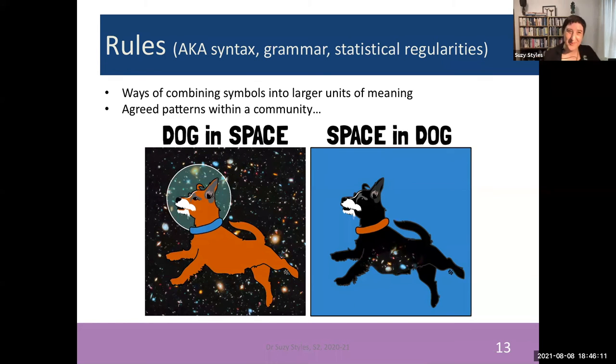So I hope you take the point that all a linguistic system has to have is symbols and rules that are agreed on by the community of users who use that linguistic system together. And when we have phenomena like this, we can call it a linguistic system.